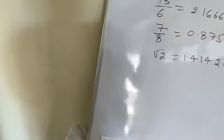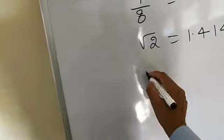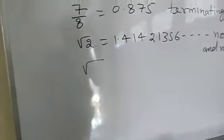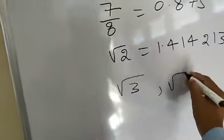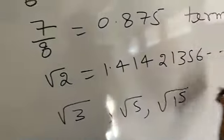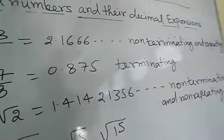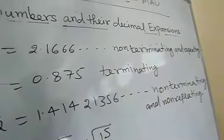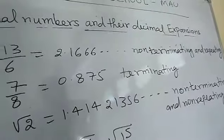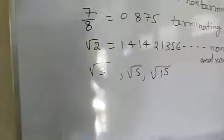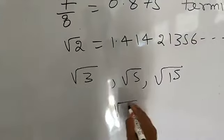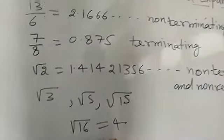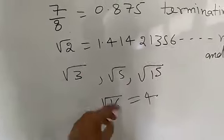Any number written under a square root that is not a perfect square will always be irrational. For example, root 3, root 5, root 15 — since 3, 5, and 15 are not perfect square numbers, they are irrational. But if the number is a perfect square, for example root 16 equals 4, which is rational, so root 16 is also a rational number.